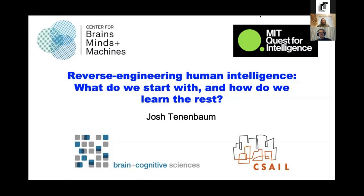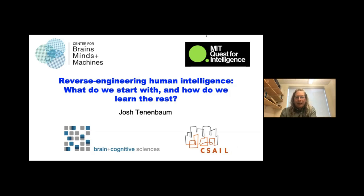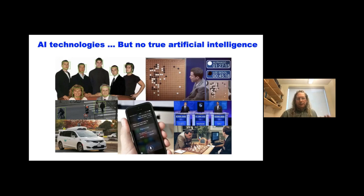I'm going to be talking about reverse engineering human intelligence with a focus on cognitive development, trying to address the fundamental question that cognitive scientists and AI researchers have been interested in: what do we start with and how do we learn the rest? The starting point for the work that I do is to look at the gap between what we have today in AI and what we would like to have. What we have in AI right now is some very useful artificial technology, but nothing like real or true artificial intelligence in the sense of the founders of the field.